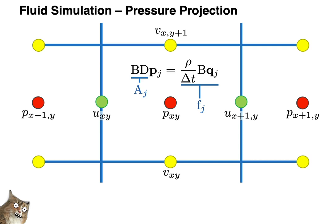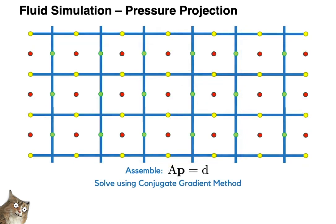Using all these operators, we can fully discretize our Poisson equation — a quite compact discretization enabled by our staggered representation. We get one equation per grid cell, and just like with finite elements, we assemble them into a global linear system and solve it. Typically in fluid simulation you solve this using an iterative solver, and the conjugate gradient method is one of the most popular. And that's really the basics of the pressure projection algorithm, but we're missing a very important ingredient: boundary conditions.